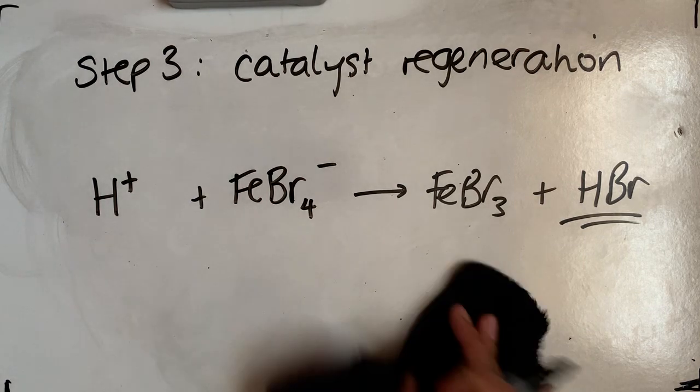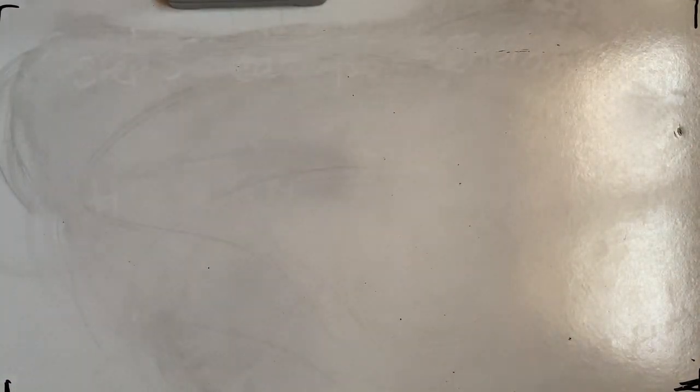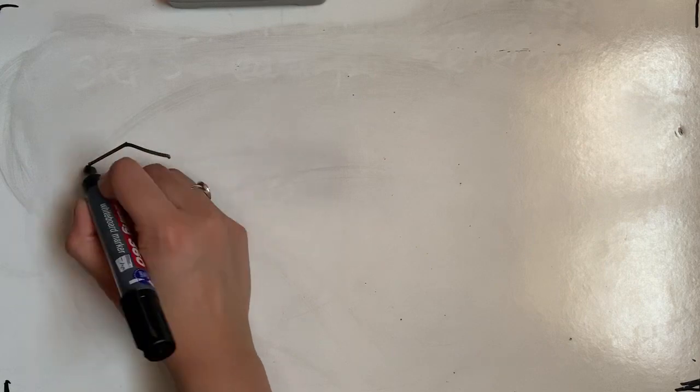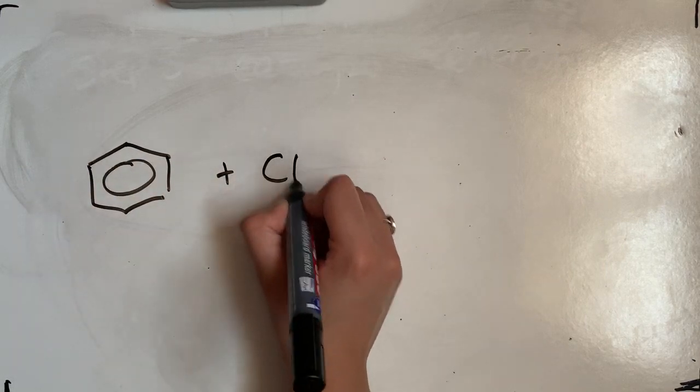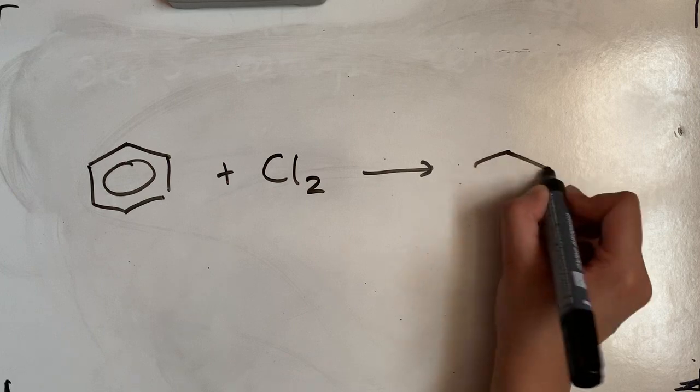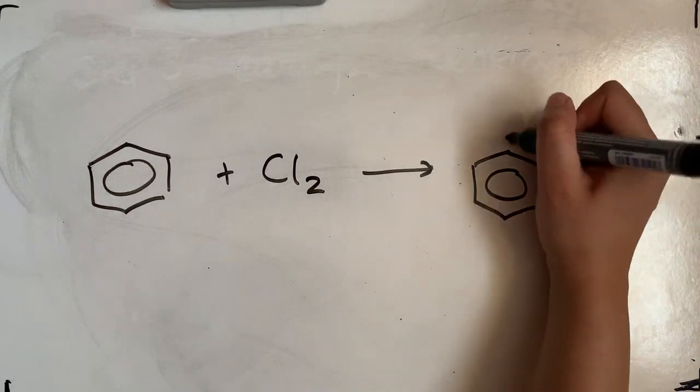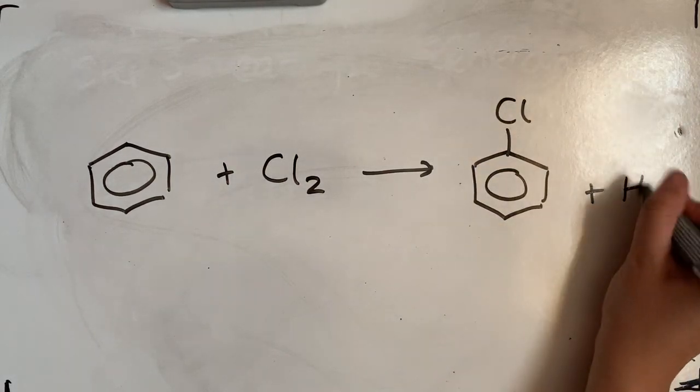Same thing you can use, so we've just done bromine as an example. You can do the same thing, so if you want to do the chlorination reaction, for example, you want to react it with chlorine, you now form chlorobenzene and HCl.